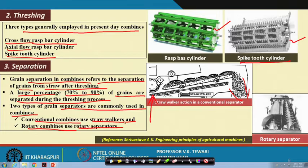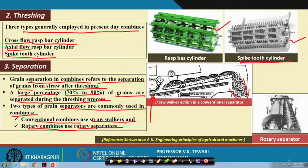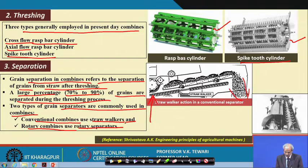To summarize the components discussed so far: cutting, the reel, the relationship between reel rotation and forward speed, threshing, and separation. Let us now look at the remaining parts of the combine.